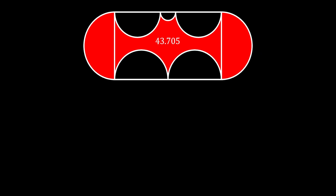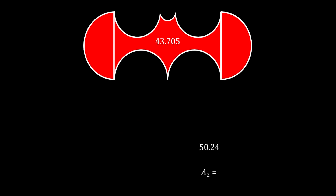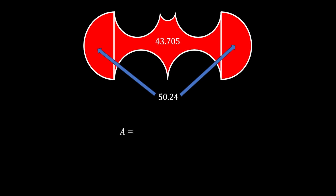Now let's find the area of the two semicircles outside the rectangle. As we found before, these have a radius of 4. Since the two are identical, we combine them into one full circle. The area is r² × π = 4² × π = 16π. Substituting π ≈ 3.14, Area 2 = 50.24. That is the area of the two semicircles outside the rectangle.